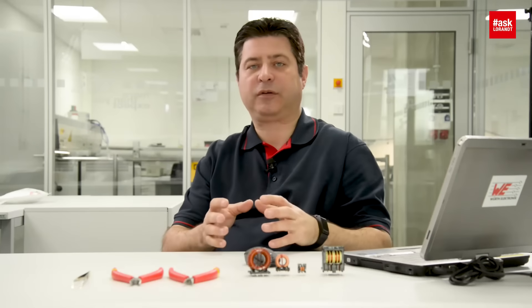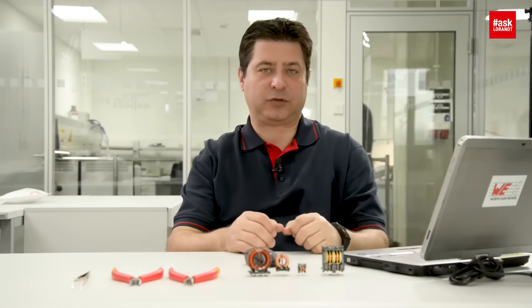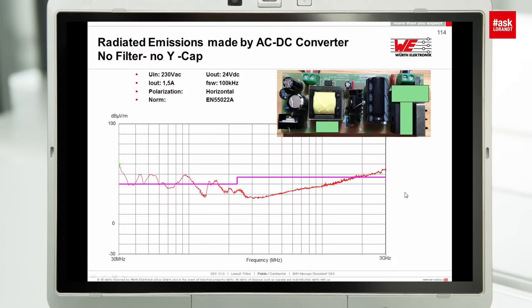If you have a DC-DC converter you can have different construction of these common mode chokes. Why is a common mode choke needed? If you talk about AC-DC converter, you can see here we made some measurements in the EMC chamber and we took a demo board for AC-DC converter. It was from 230 volt to 24 volt DC, switching frequency 100 kilohertz and the output current was 1.5 amps.